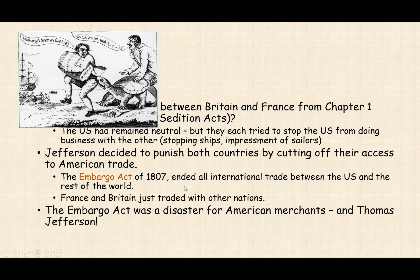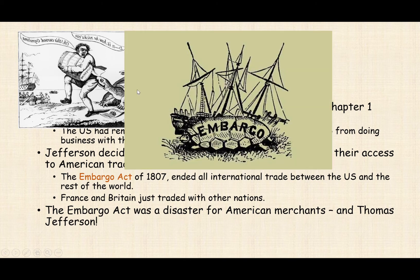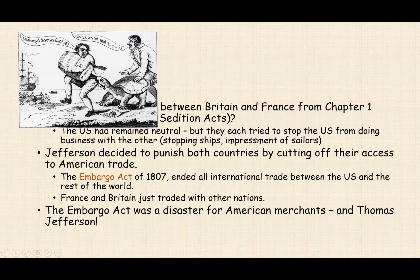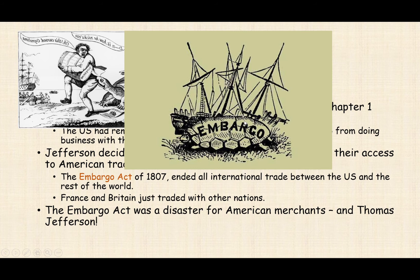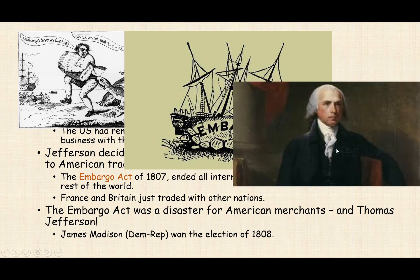Luckily for Jefferson, his administration was nearly over. Interestingly, the embargo is often symbolized by a turtle — you'll see it depicted as snapping and stopping trade. In the election of 1808, James Madison — former Secretary of State — wins the presidency. The Democratic-Republicans remain in power.